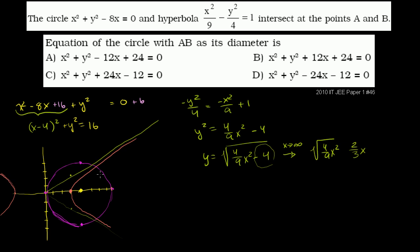The hyperbola and the circle intersect at points a and b — this is point a and this is point b. We want the equation of the circle with a and b as its diameter. So we essentially just need to figure out where the hyperbola intersects the circle.